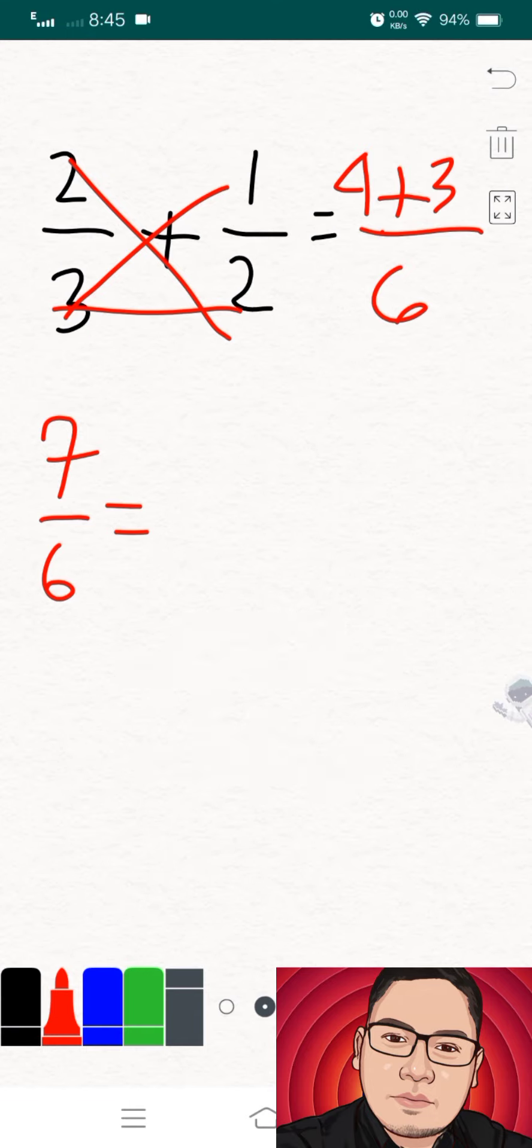And how to convert this improper fraction to mixed fraction? Well, just simply get the factor or the factoraddends of its numerator, and make sure that one of its factors is equal to its denominator. And seven, of course, that is six plus one, because one of its addends is equal to its denominator.